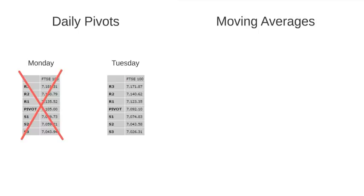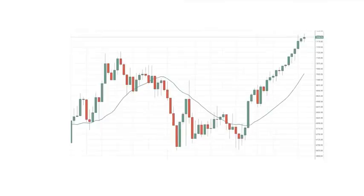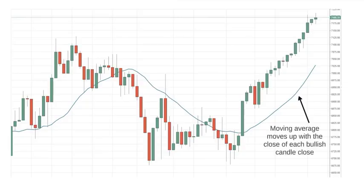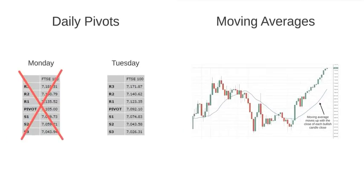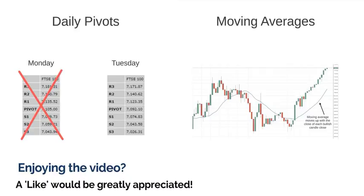Moving average levels are dynamic as well, constantly changing with the formation of every candlestick. Dynamic support and resistance levels such as daily pivots and moving averages usually plot themselves through indicators within a charting platform, so if you add them to your chart, the levels will update as soon as they need to. Static support and resistance areas usually have to be identified and plotted manually.